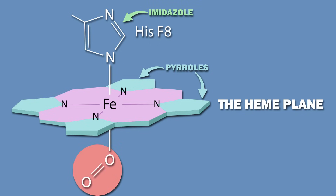When oxygen binds to the iron, that is the sixth ligand. Note that when oxygen is added on, it is tilted at 60 degrees to the perpendicular.